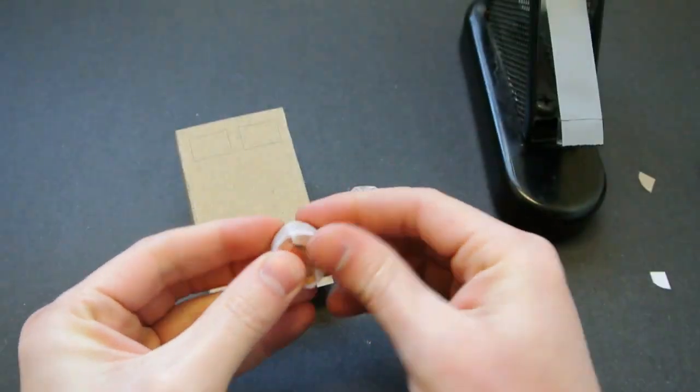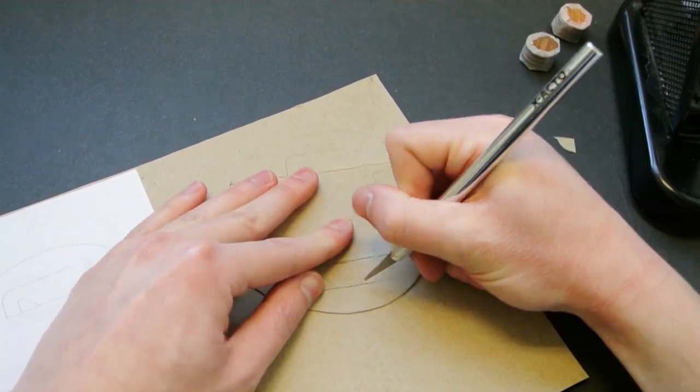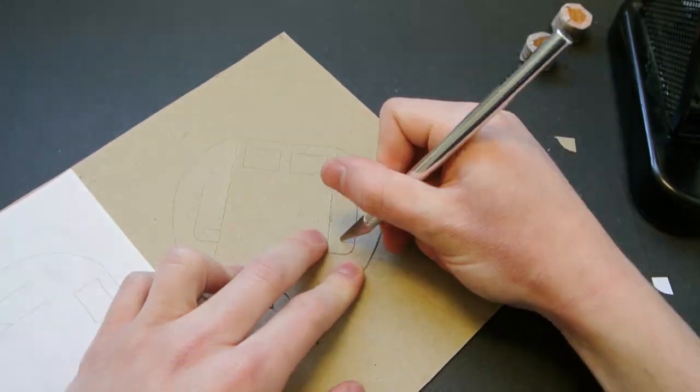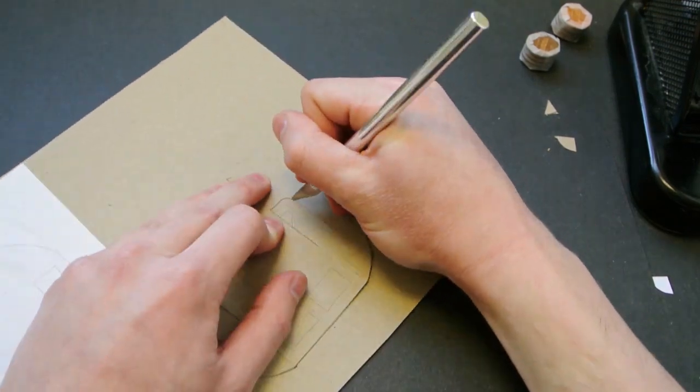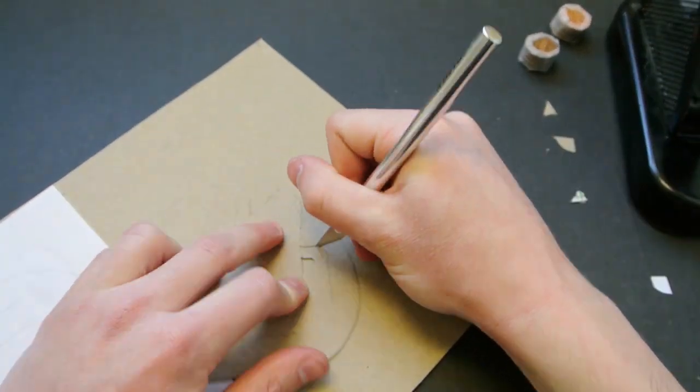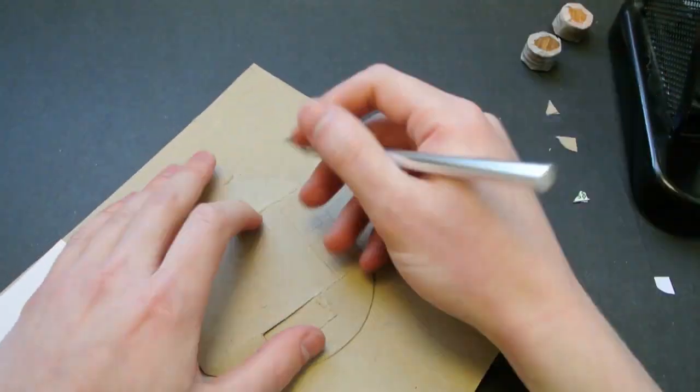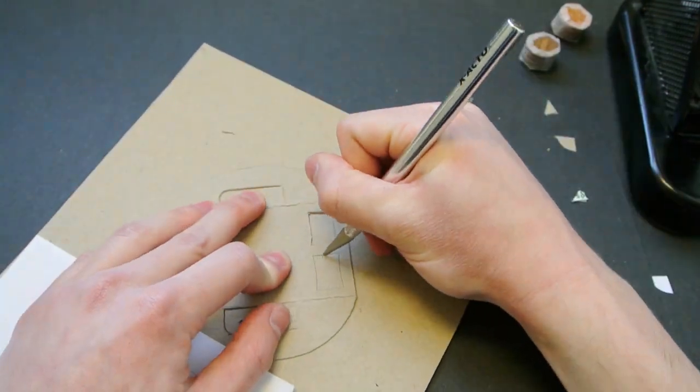For the inner parts of the design, we need to cut them out with a hobby knife or other sharp blade. Just try to cut along the lines. The dotted lines are where a fold will be, so you do not need to cut any of the dotted lines.